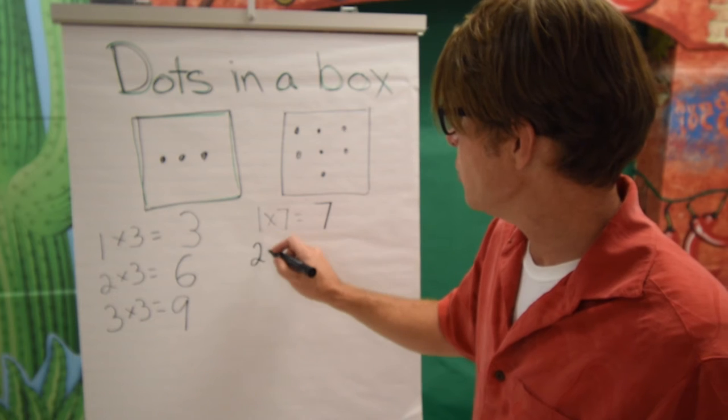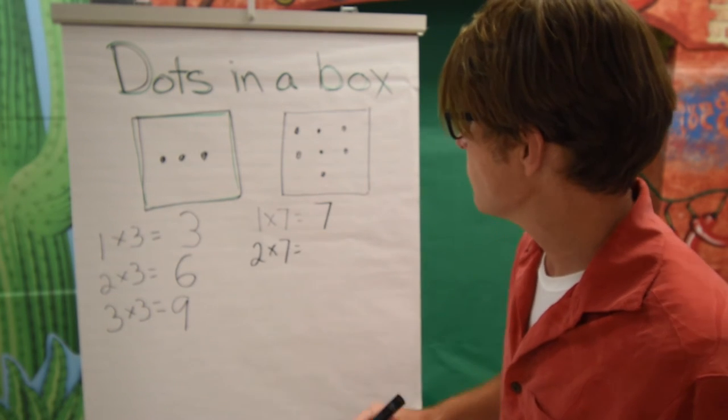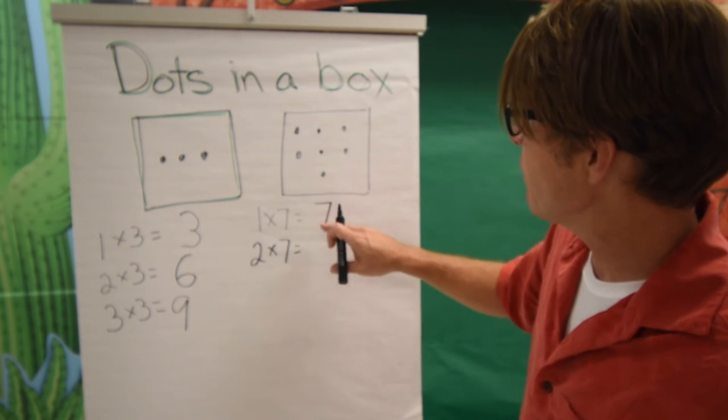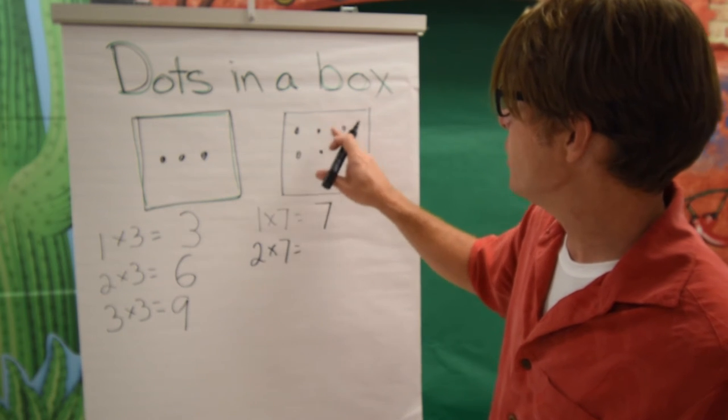Have your student write down two times seven. We're at seven. Say seven, eight, nine, ten, eleven, twelve, thirteen, fourteen.